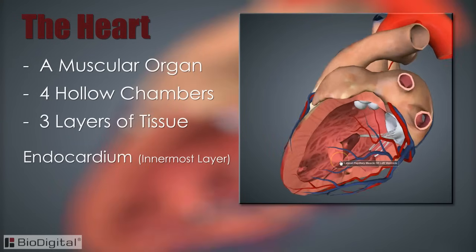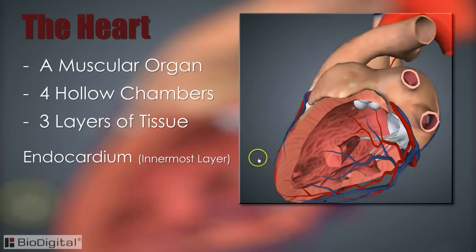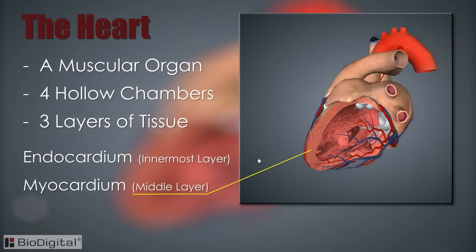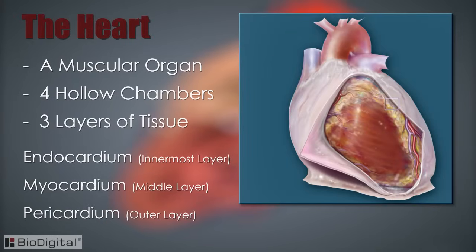The heart is made up of three layers of tissue. The innermost layer is the endocardium, which is the thin smooth membrane that lines the inside of the chambers and forms the surface of the valves, of which there are four. Next is the myocardium, the muscular wall of the heart, or heart muscle. And third is the pericardium, a tough double-layered fibrous sac which covers the heart.